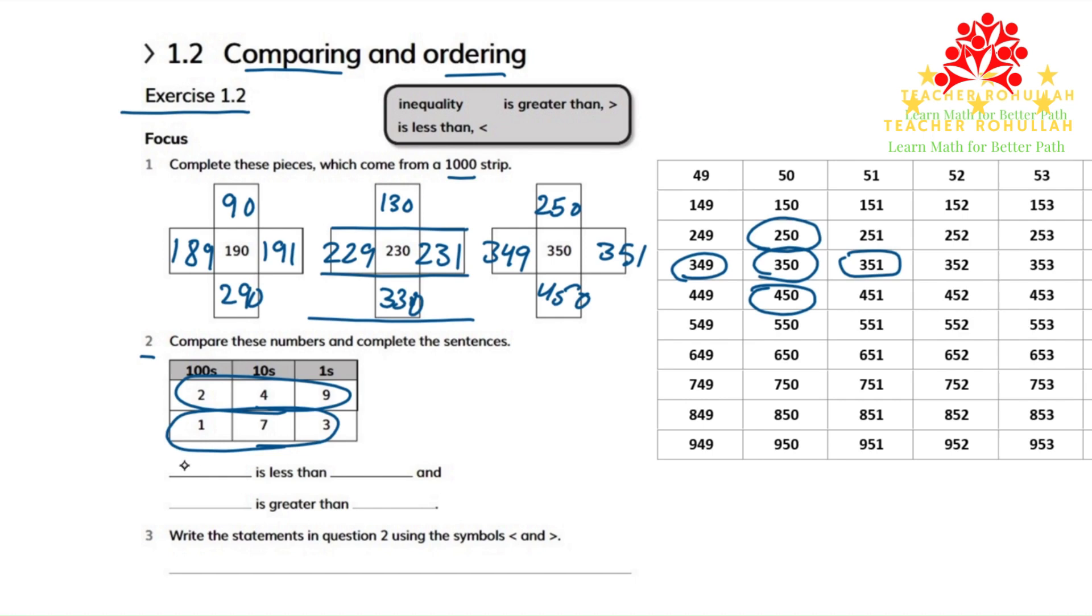To complete the sentences we can write that 173 is less than 249 and 249 is greater than 173. We are done with question number two. Let's go down to question number three.